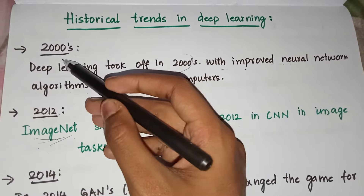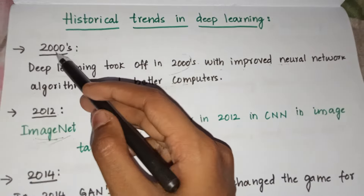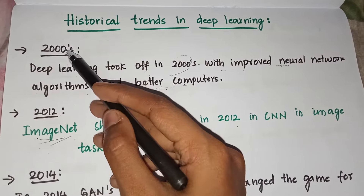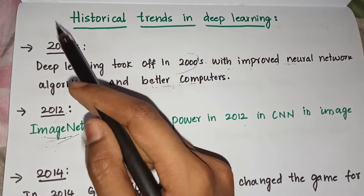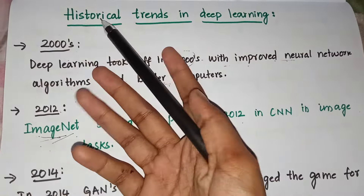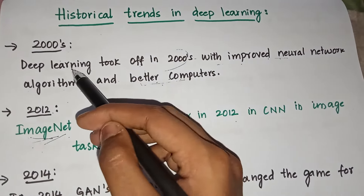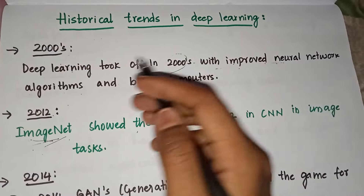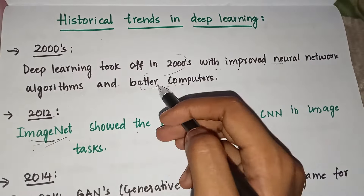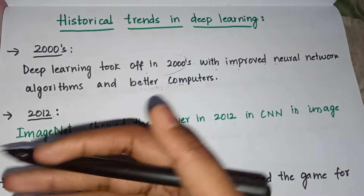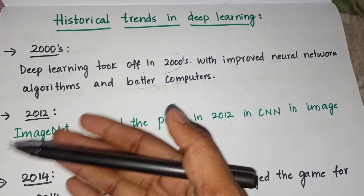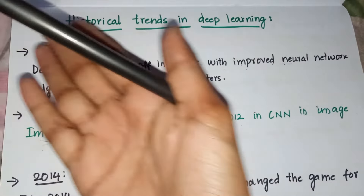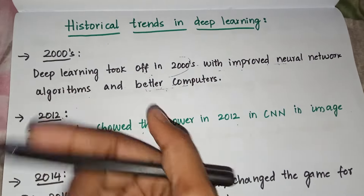Starting from the 2000s — deep learning actually started before that, but it was not so developed. Deep learning took off in the 2000s with improved neural network algorithms and better computers. We got better computers and algorithms, we got neural networks at that time, and that is why deep learning came into existence.